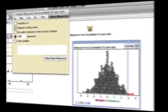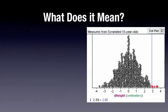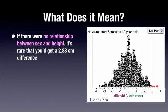Let's think about what that means. Remember that scrambling makes it so there is no relationship between sex and height. And that's what this graph shows. If there were no relationship between sex and height, it's rare that you'd get a 2.88 cm difference. How rare?